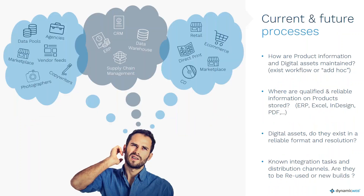The second area is more about data. We look into what is the current data, where do they have it, how are they dealing with product information and digital assets today, and how are they maintaining it. Where do they have qualified and reliable information — is it in the ERP system, spread across different Excel sheets, or maybe in a PDF catalog? When you go into a PIM project, it's quite important to know where you can get your product information from as a startup.